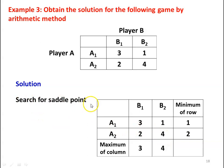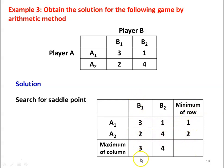Step 1: search for the saddle point. The matrix is B1, B2 with rows A1 and A2, values 3, 1, 2, 4. We write the minimum value of each row in the third column: row A1 minimum is 1, row A2 minimum is 2. For the columns, the maximum value of column B1 is 3, and the maximum value of column B2 is 4.